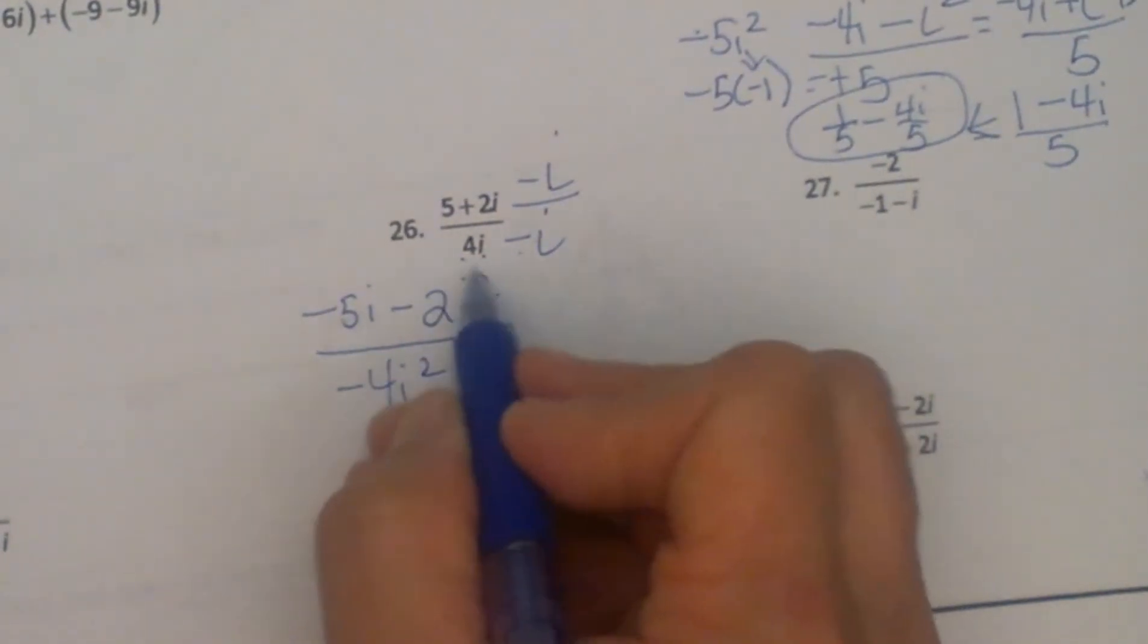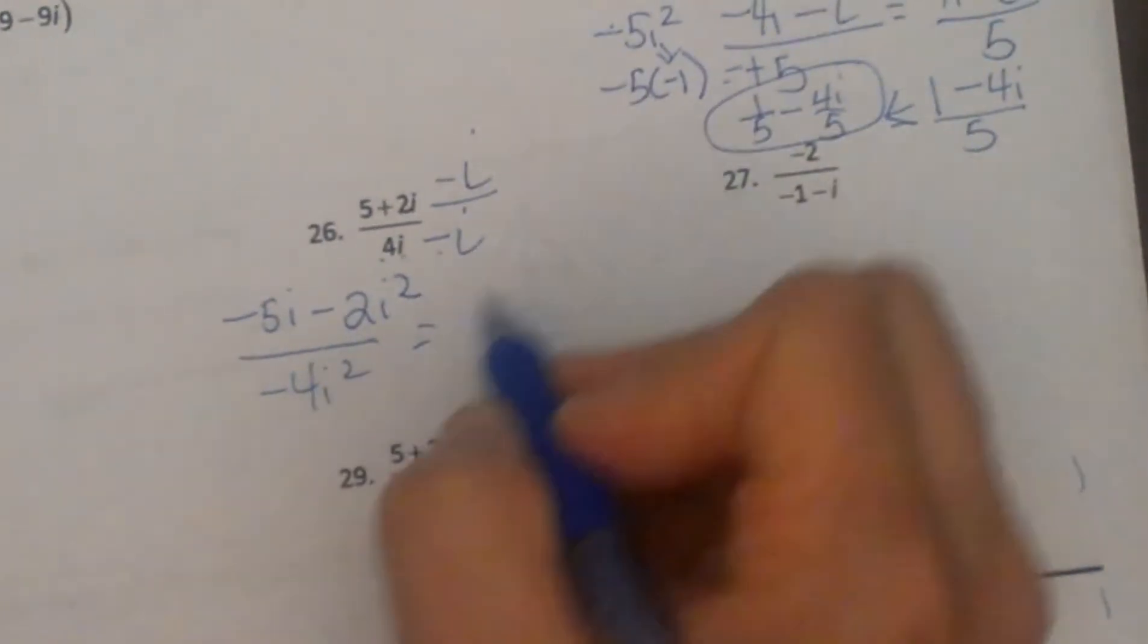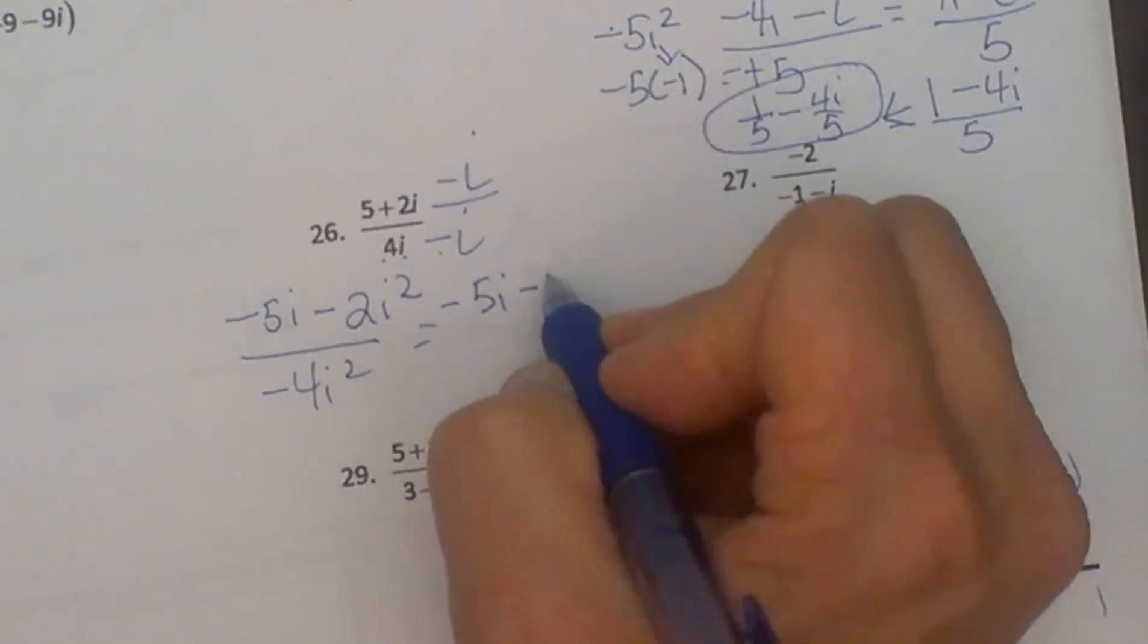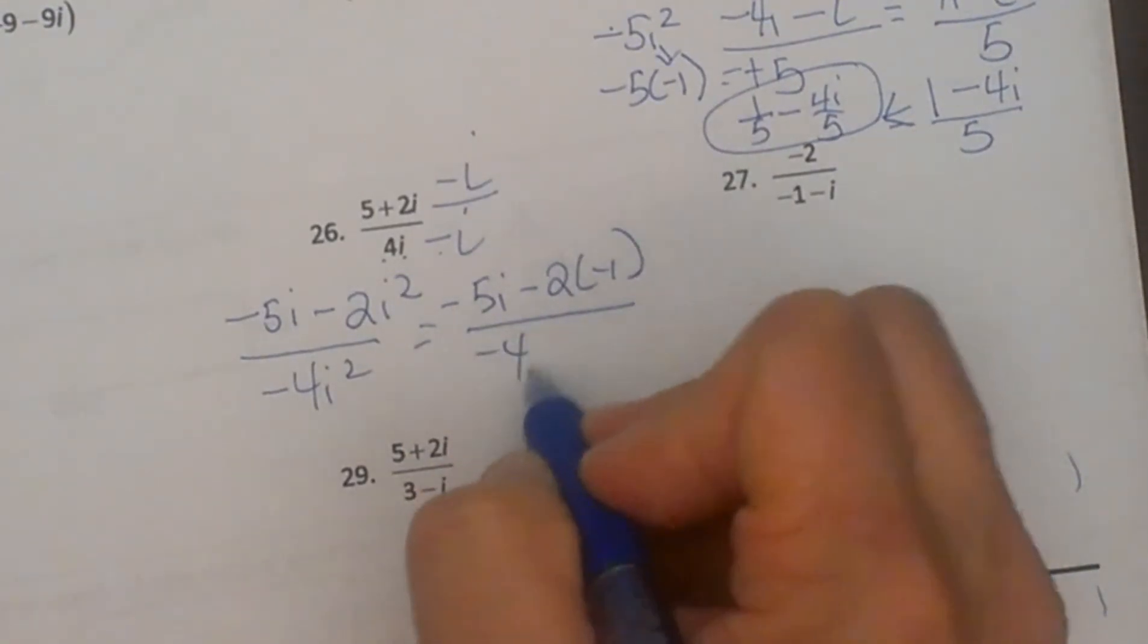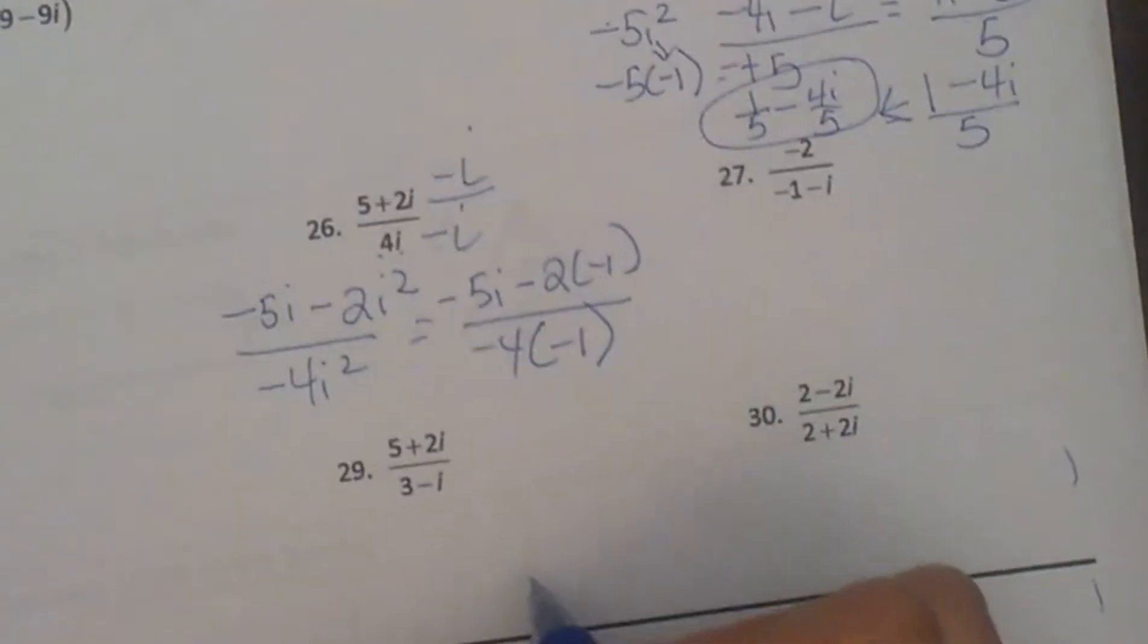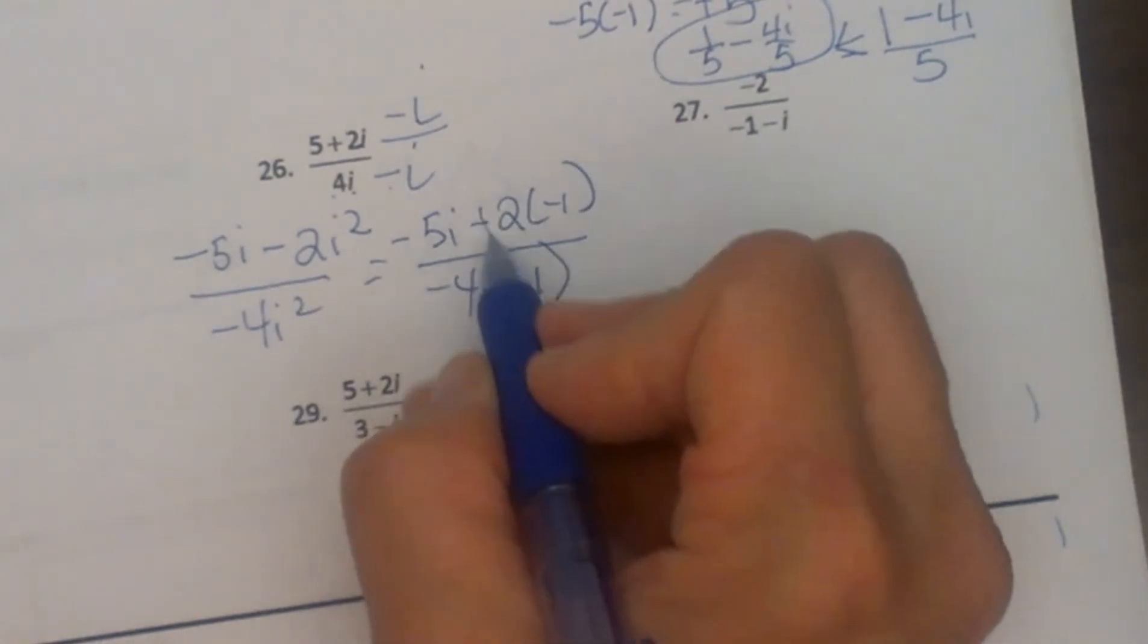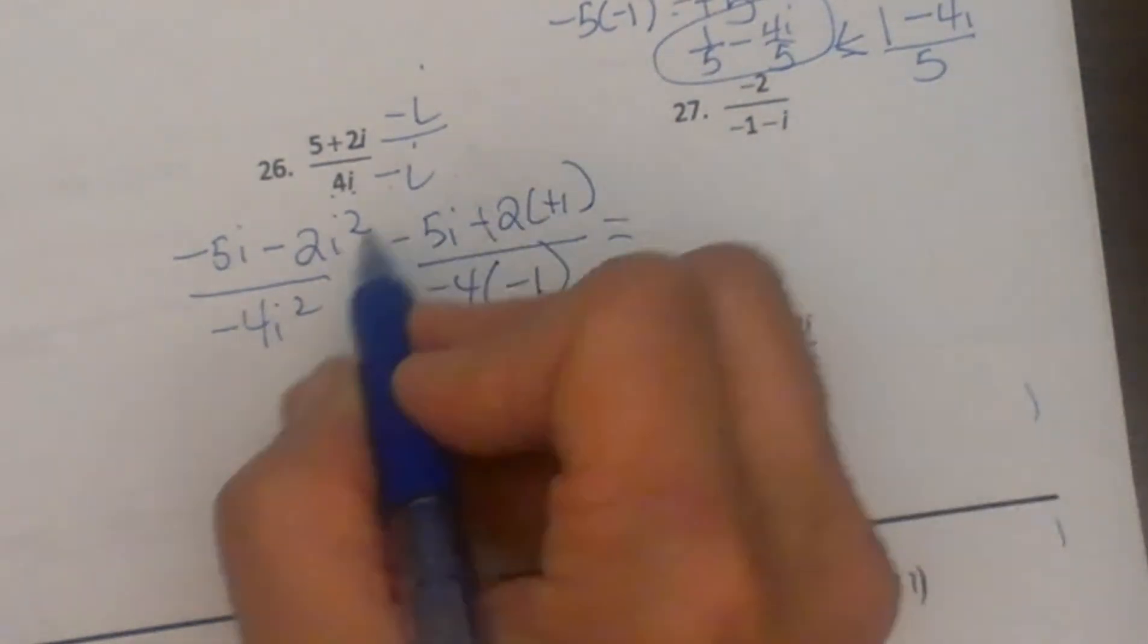Replacing the i squareds with negative 1s, I am going to get negative 5i minus 2 times negative 1, all over negative 4 times negative 1.